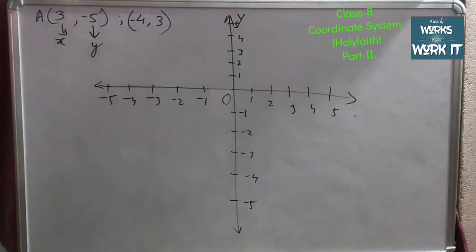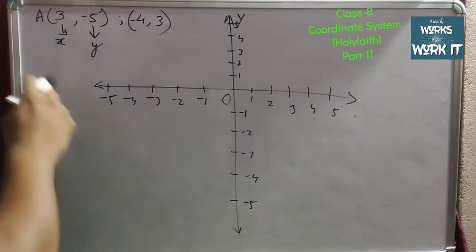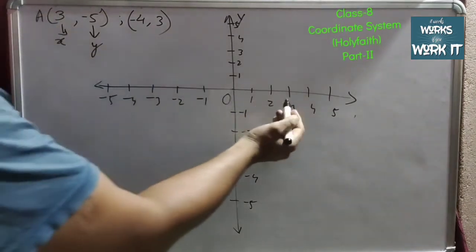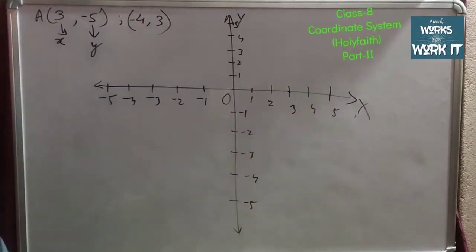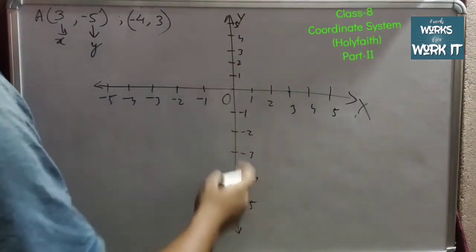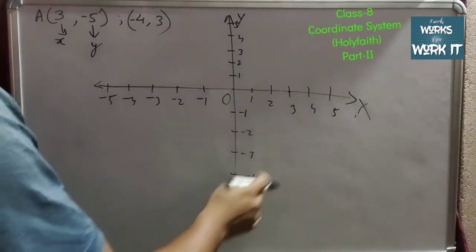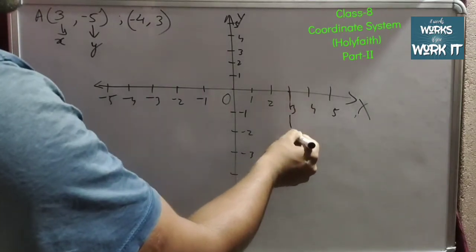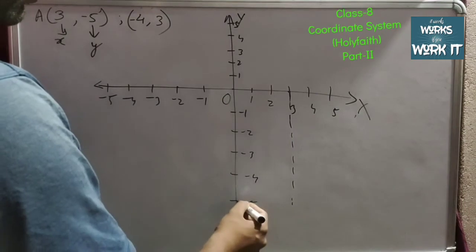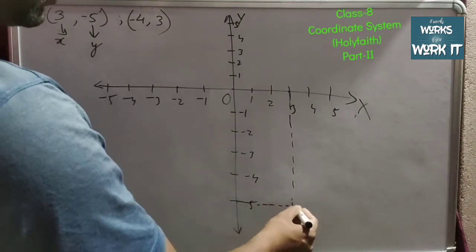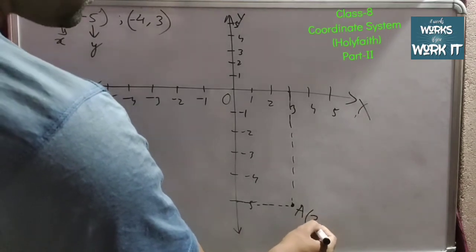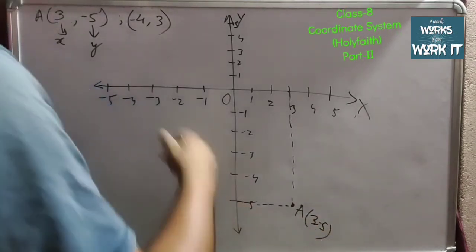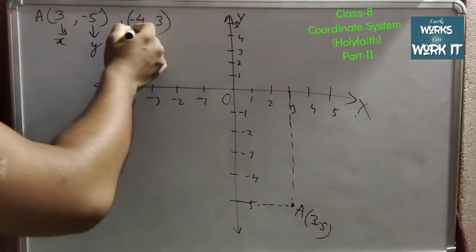Let me take the first point, that is (3, -5). First x-axis is 3, so where is x-axis 3? This is the point of x-axis that is 3. And -5, where is -5 of y-axis? This is the -5 of y-axis. So it will come perpendicular straightly and from here also it will come straightly. So this point is our A (3, -5).